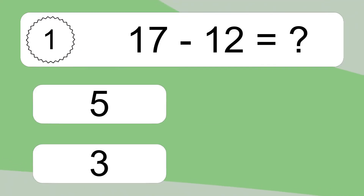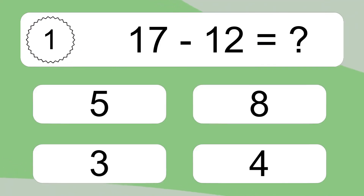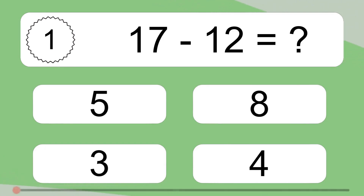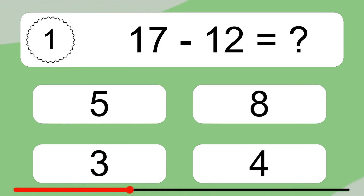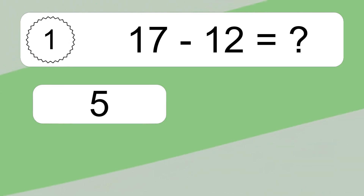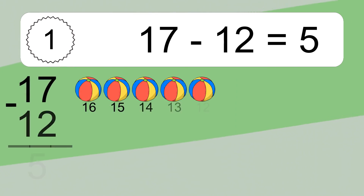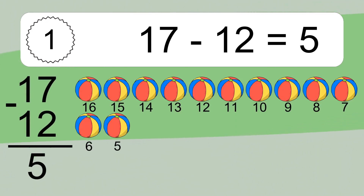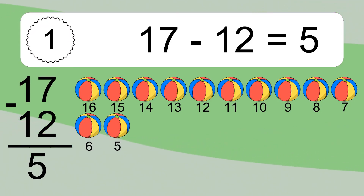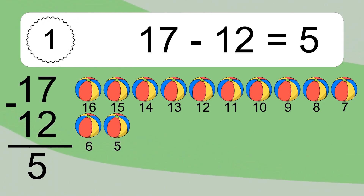17 minus 12 equals what? 17 minus 12 equals 5. Let's count it! 16, 15, 14, 13, 12, 11, 10, 9, 8, 7, 6, 5.